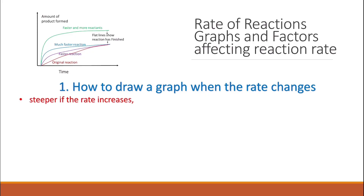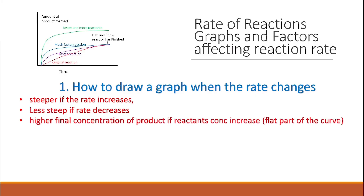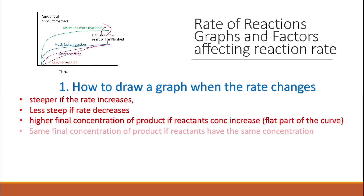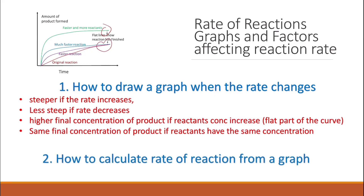Remember that the curve will be steeper if the rate increases and less steep if the rate decreases. The final concentration of the product will be higher if we increase the concentration of the reactant. But if we keep the concentration of the reactant the same and change other factors, the curve will be steeper or less steep, but the final concentration of the product will remain the same. To calculate the rate from the graph, draw the tangent at a particular time and calculate the slope of that tangent.